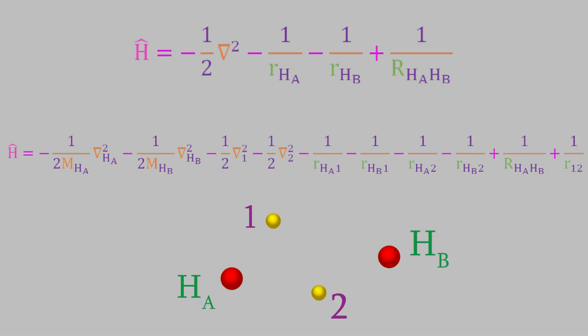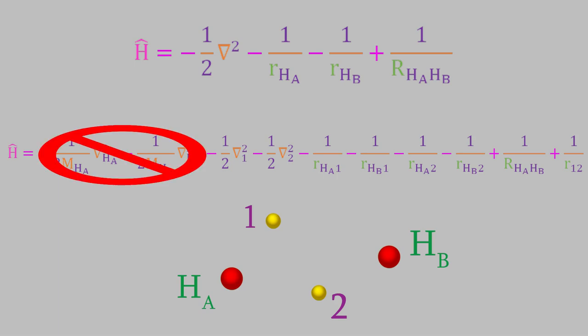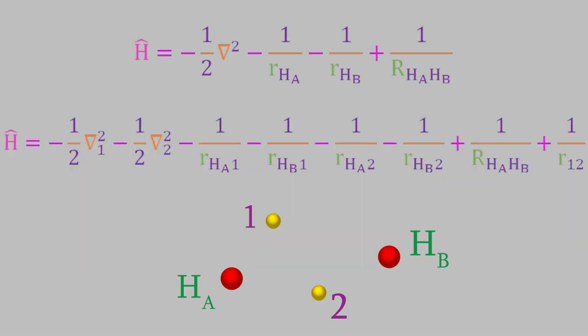Just as in the previous example, we can apply the Born-Oppenheimer approximation, which eliminates the terms for the kinetic energy of the nuclei. What we're left with is a Hamiltonian that has eight terms. You can see that the Hamiltonian will have lots of terms for systems that contain larger atoms or many different nuclei.